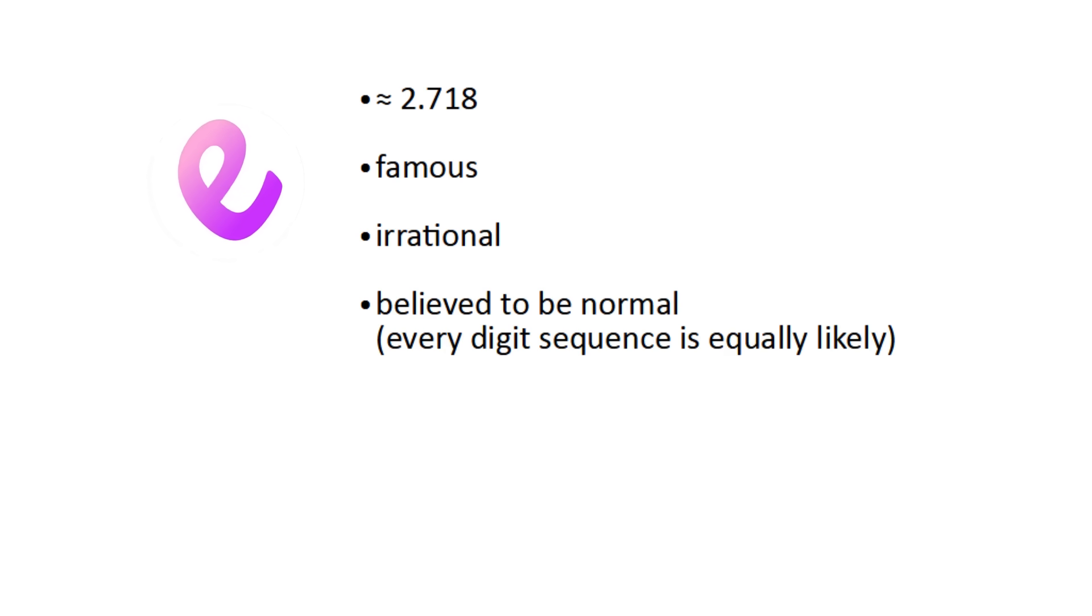The number e is a famous irrational number, and just like pi, its digits are unpredictable. But funny enough, there's a repeated pattern within the first few digits. Specifically, it goes 2.718281828.